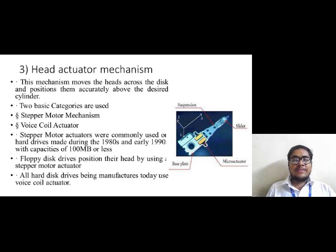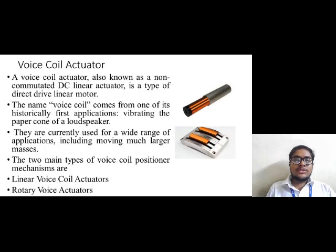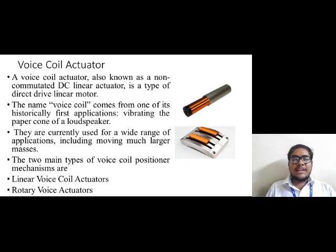All hard disk drives manufactured today use a voice coil actuator. It is also known as a non-commutated DC linear actuator and is a type of direct drive linear motor. The name voice coil comes from one of its historically first applications — vibrating the paper cone of a loudspeaker. They are currently used for a wide range of applications. There are two main types: linear voice coil actuator and rotary voice coil actuator.